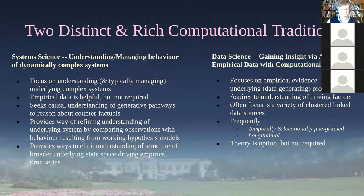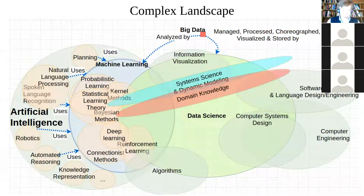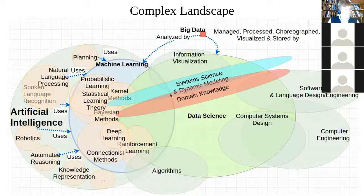We've talked about system science and data science as two computational traditions we're bringing together. And yesterday we did a survey of the relationship between big data, machine learning, AI, and data science. We noted that system science is not subsumed purely by those, but neither is it a world apart from those — so there's some definite overlap here.